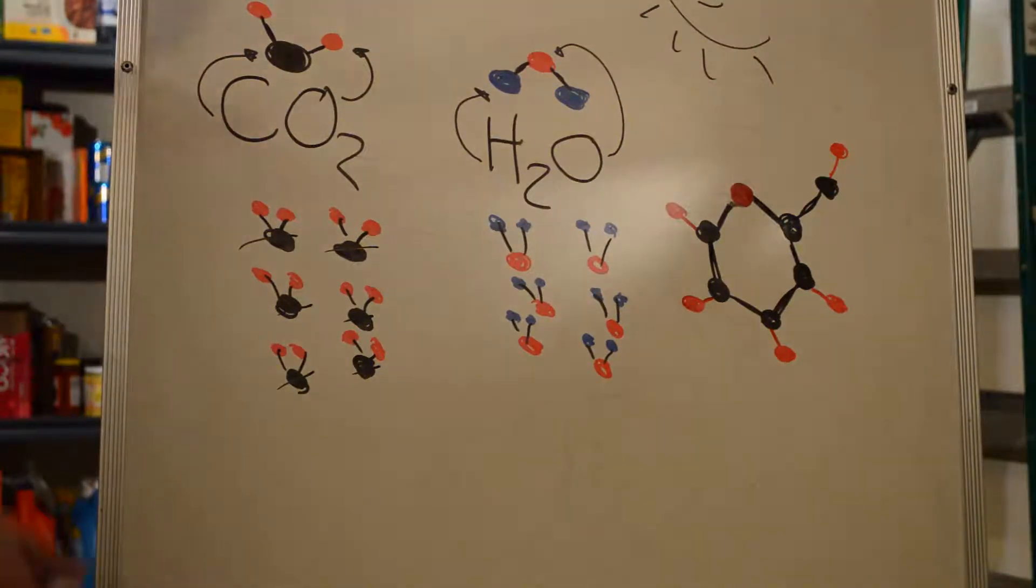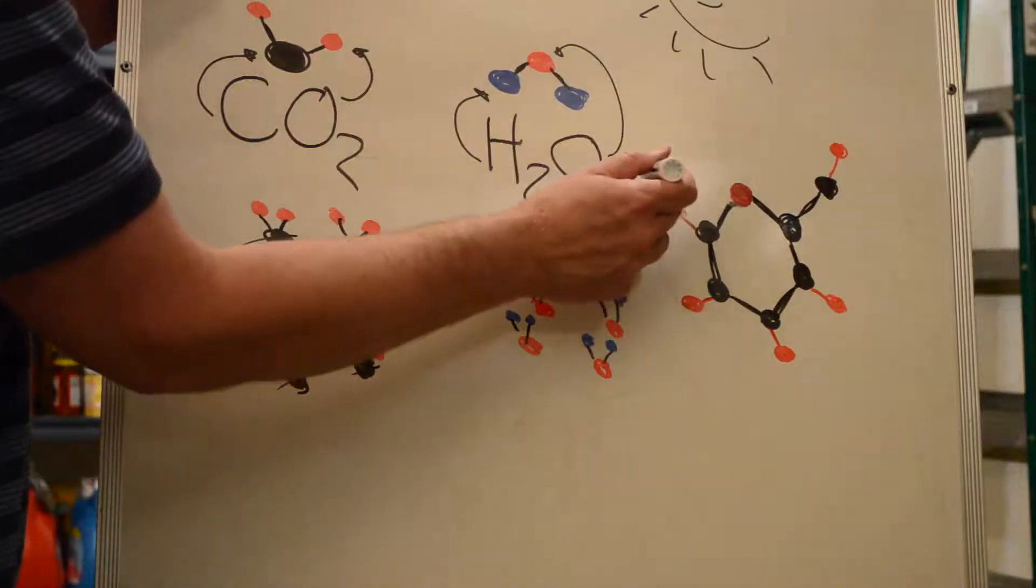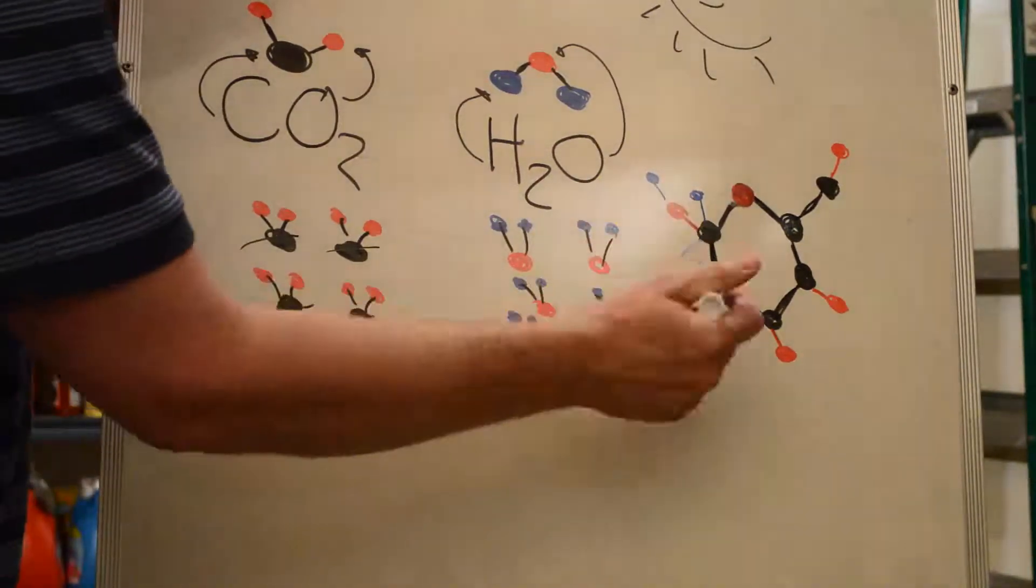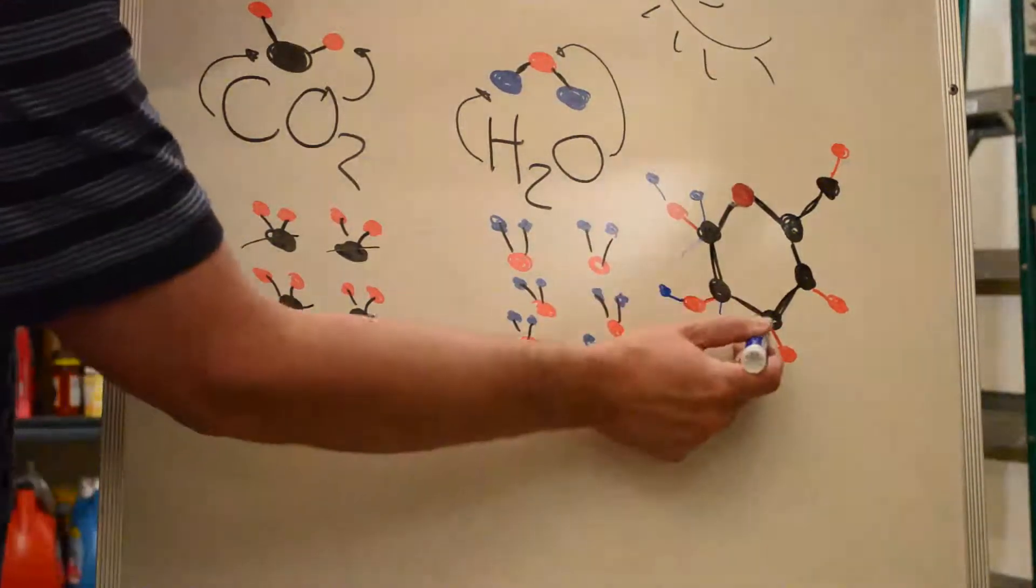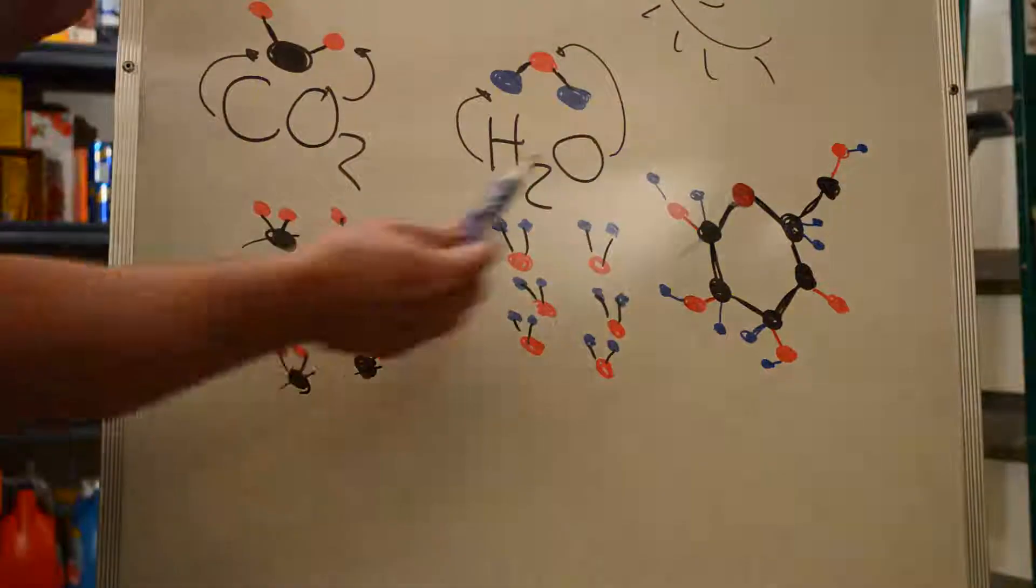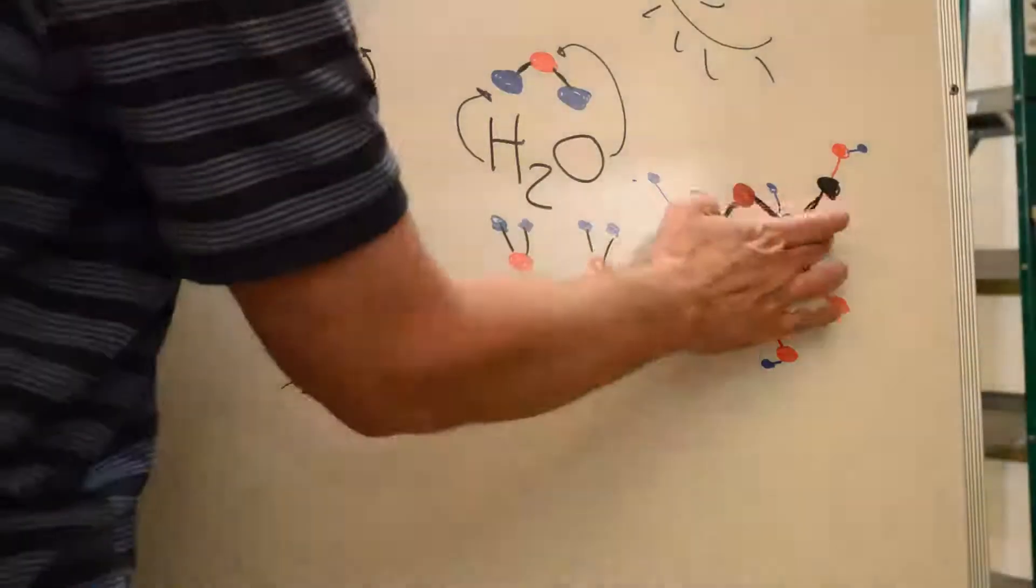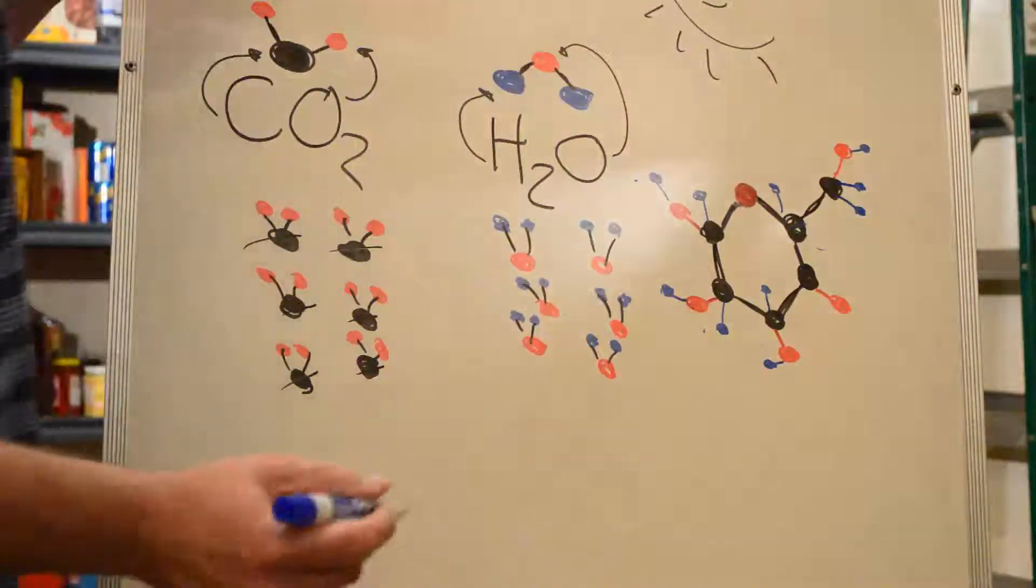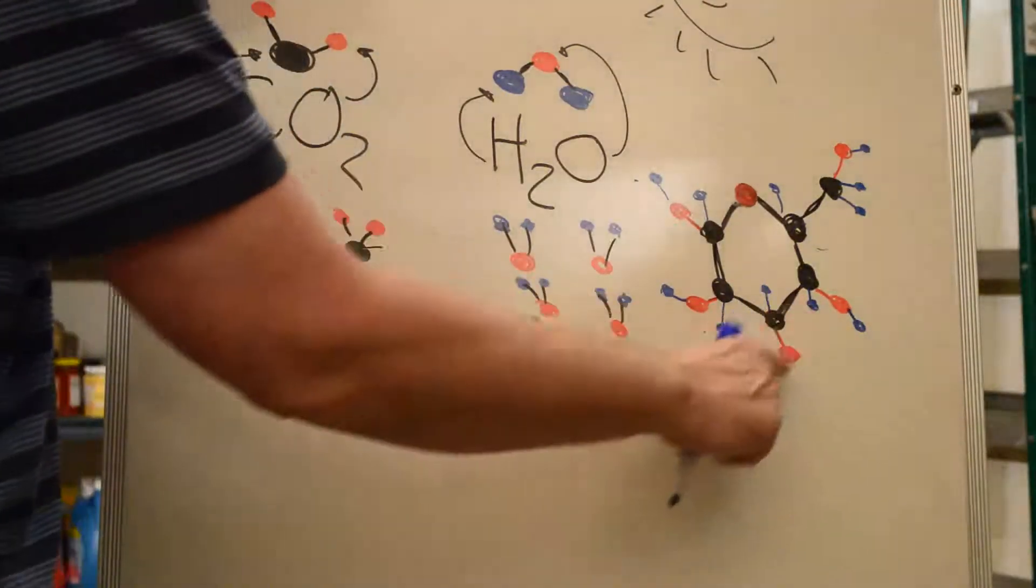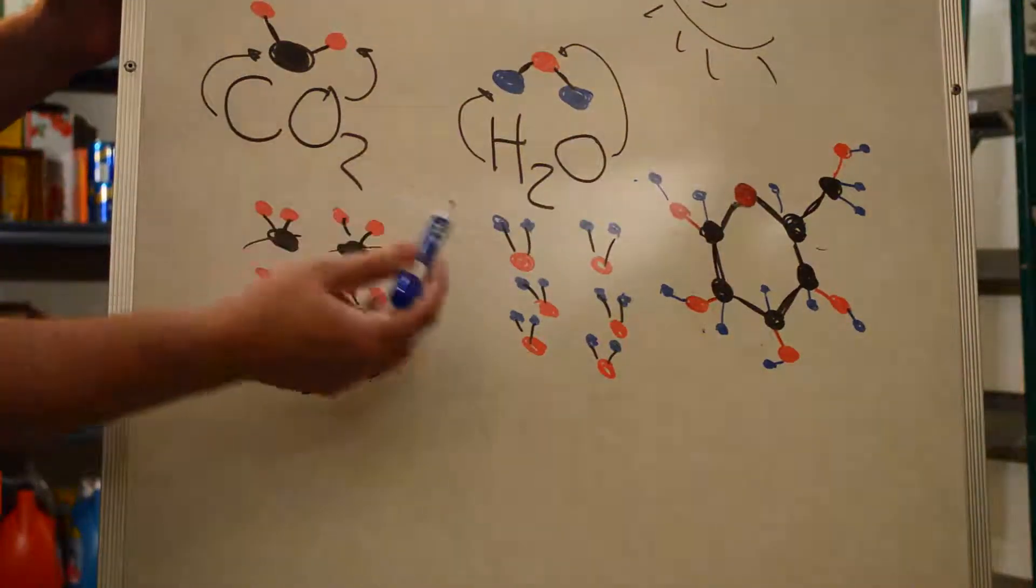And then it needs these little blue ones, which are the hydrogen. And when it's all said and done, we're going to have a little hydrogen off this guy. And then one of these each here. And let's see how many that gives us. One, two, three, four, five, six, seven, eight, nine, 10, 11, 12.